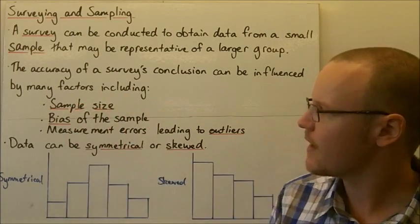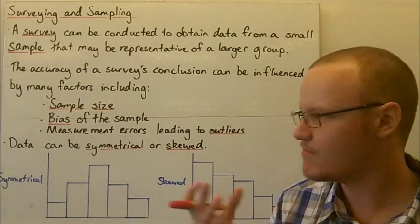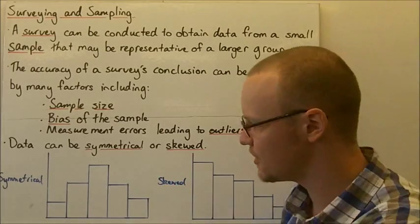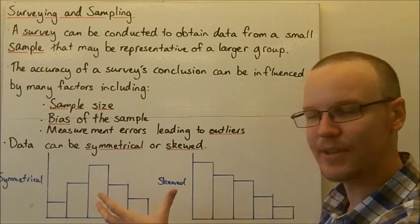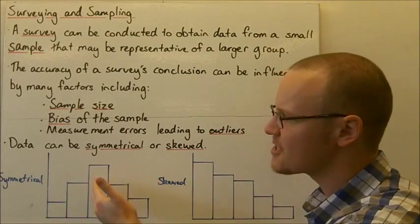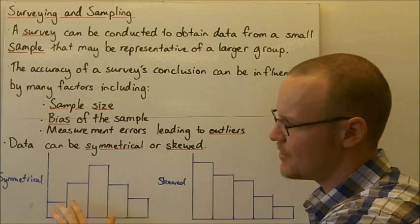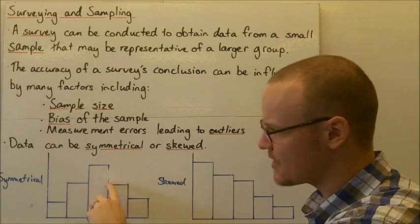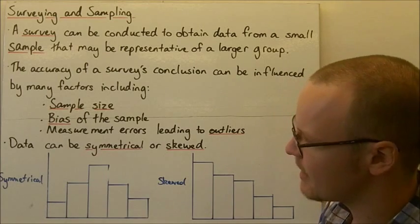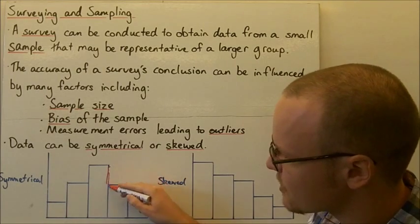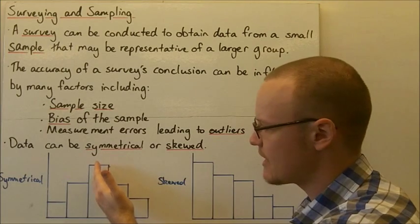Now, in saying all of that, data that we can collect, it might be symmetrical or it might be skewed. So this is the sort of shape that you get from symmetrical data. There's some mean and the mean and the median are very similar, very close to each other. So the mean and the median are pretty much around the middle here.